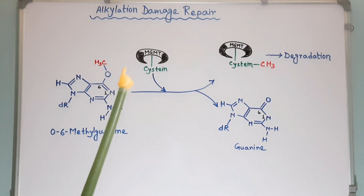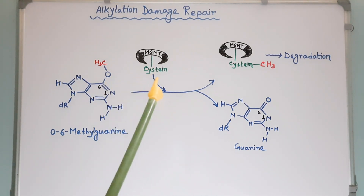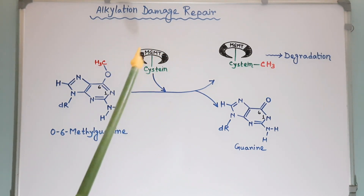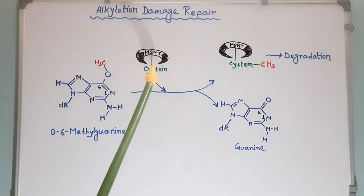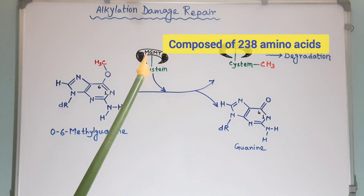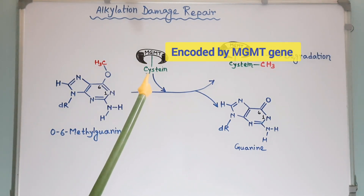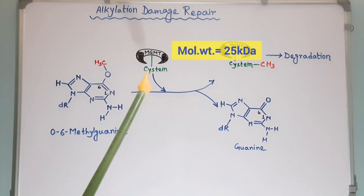Here, in this diagram, I have tried to show the mode of action of methylguanine methyltransferase or MGMT. It is a protein composed of 238 amino acids. In humans, it is encoded by the MGMT gene, with a molecular weight of 25 kD.